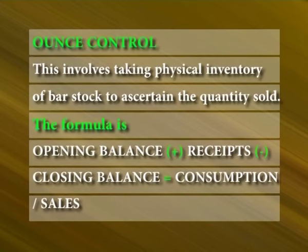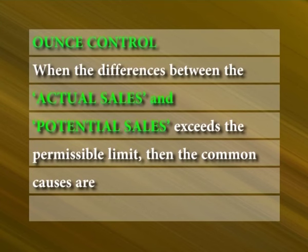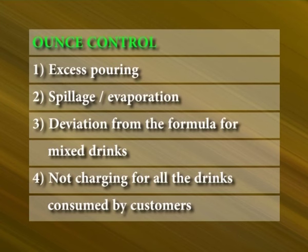Ounce control: This involves taking physical inventory of bar stock to ascertain the quantity sold. The formula is: opening balance plus receipts minus closing balance equals consumption or sales. This is compared with the detailed sales record; the actual sales must tally with the actual consumption figures of the physical inventory. When the differences between actual sales and potential sales exceed the permissible limit, the common causes are excess pouring, spillage or evaporation, deviation from the formula for mixed drinks, and not charging for all drinks consumed by customers.